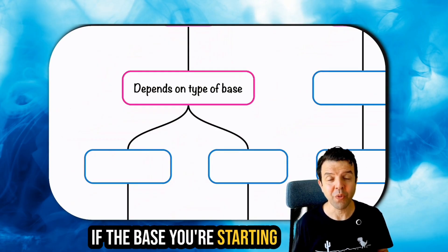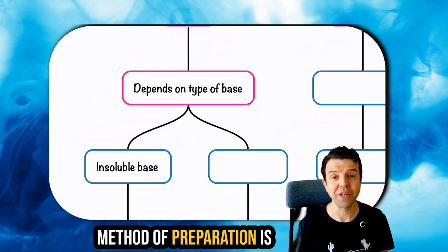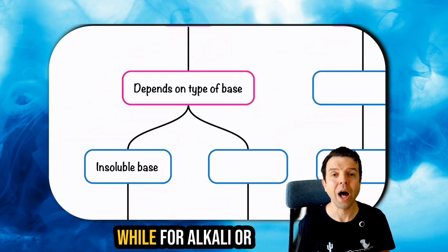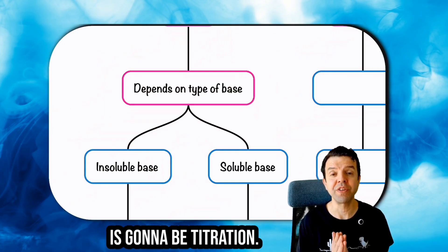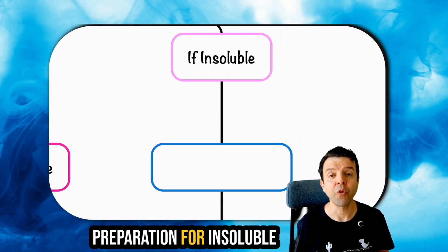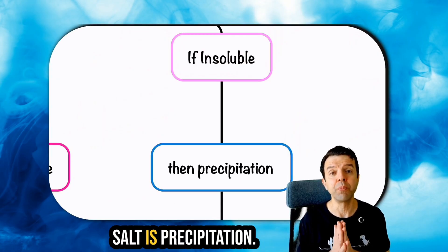If the base you're starting with is insoluble, then the method of preparation is going to be neutralization, while for alkali or soluble bases, the method of preparation is going to be titration. The only method of preparation for insoluble salt is precipitation.